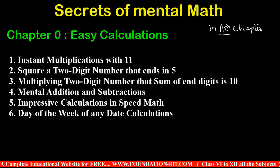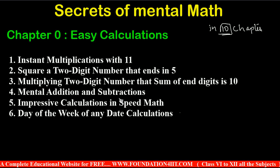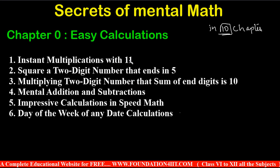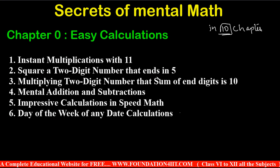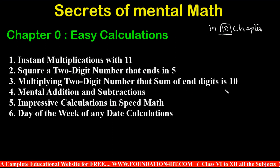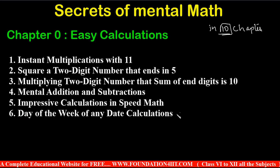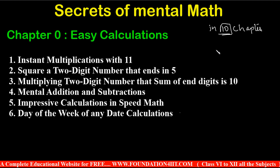Within 10 chapters I will explain everything. Let us start with Chapter 0, where I will briefly explain what each chapter covers. Topics include: multiplying with 11, squaring a two-digit number that ends in 5, multiplying two-digit numbers whose end digits sum to 10, mental additions and subtractions, impressive speed maths calculations, and finding the day of the week for any date.